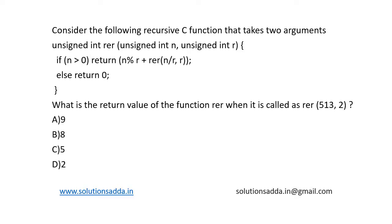This is a previous RISO question. Consider the following recursive C function which takes two arguments n and r. If n is greater than 0, it returns n mod r plus a function call of n by r, r. If it is less than or equal to 0, then it returns 0. We are asked to calculate the value of rer of 513, 2.